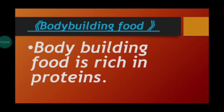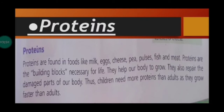Body-building food is rich in proteins. Proteins are found in food like milk, egg, cheese, peas, pulses, fish and meat. Proteins are the building blocks necessary for life.